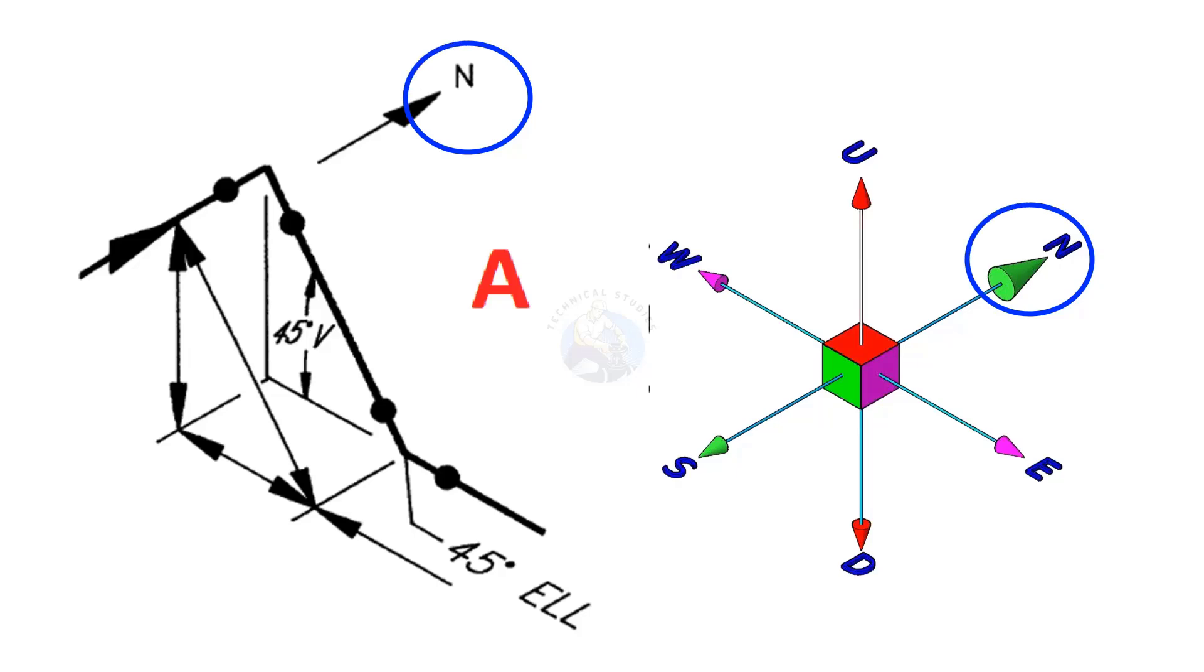See the north direction of the drawing. Pipe goes from south to north, turns 90 degrees downwards.